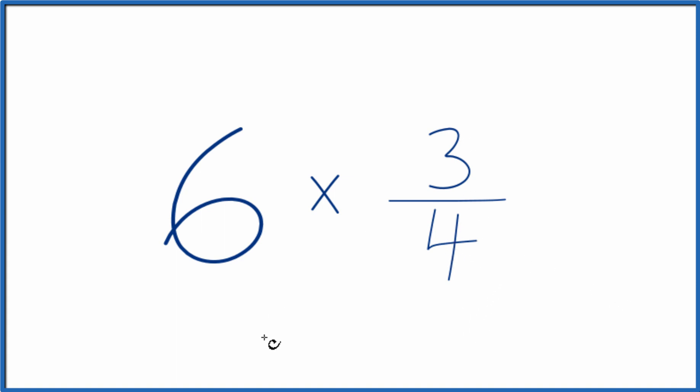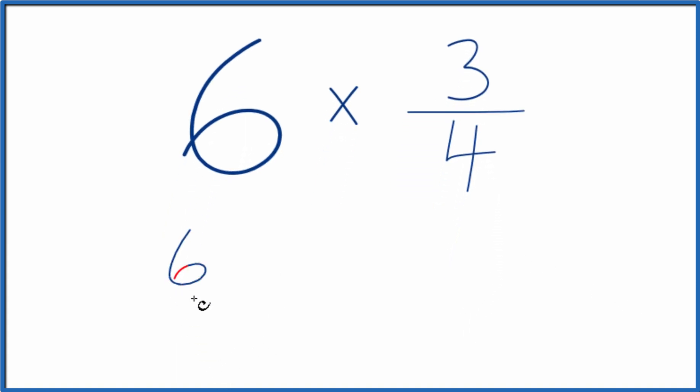Maybe an easier way is to think about it as 6 being 6 over 1. 6 divided by 1, that's still 6, but now we have a fraction. We can multiply that times 3 fourths.